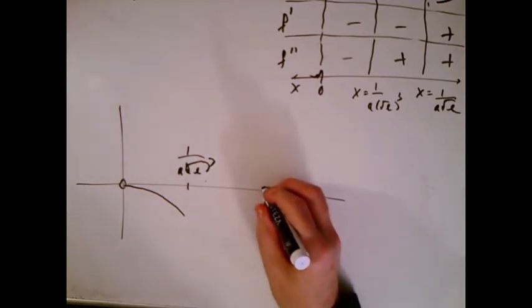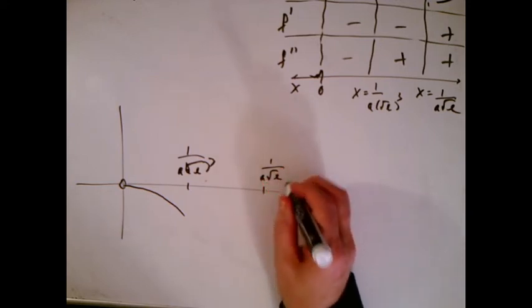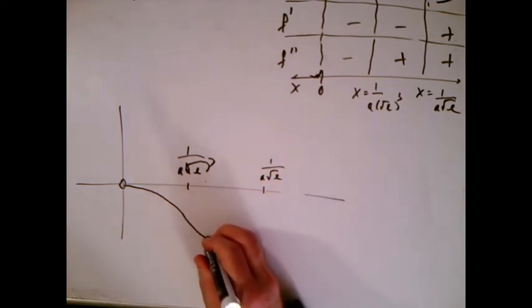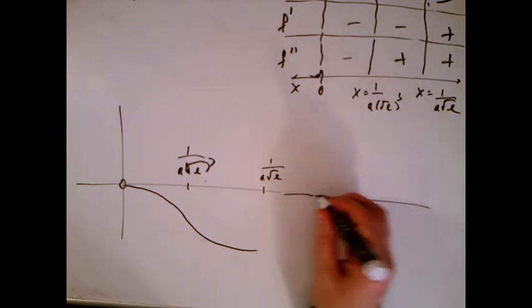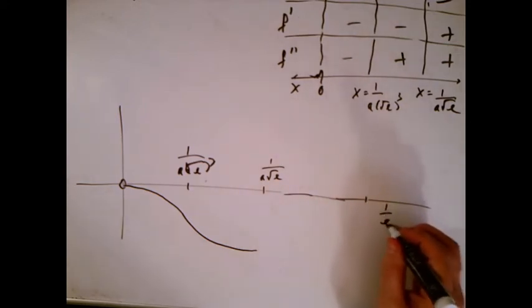And then until the next weird number, one over a square root of e is supposed to continue going down like that. I also know there's an intercept over here someplace over at one over e, I'm trying to put it like that.